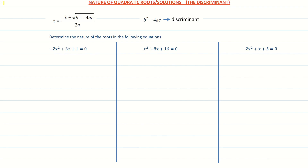The discriminant is basically just the part under the square root: b squared minus 4ac. That's the only part we're focusing on here, and that's what's known as the discriminant. When we sub in our values for a, b, and c, that will tell us the nature of the roots — whether there are two of them, one of them, or none.